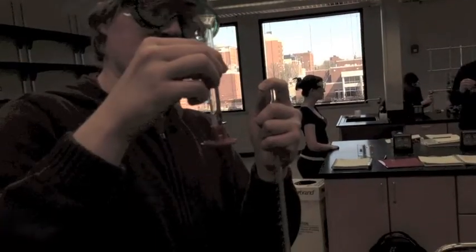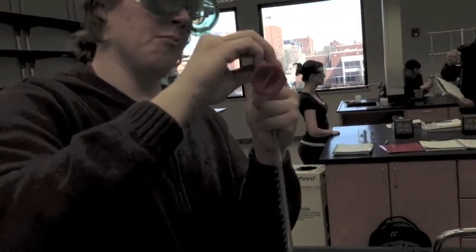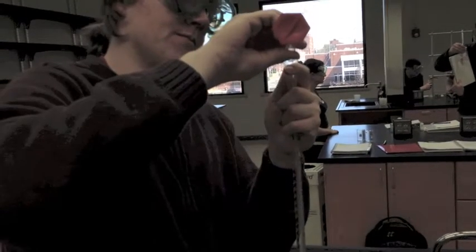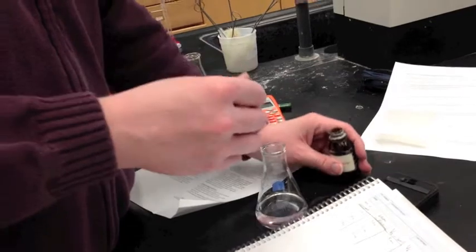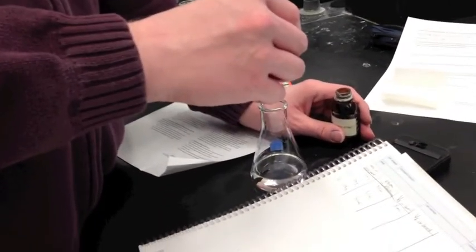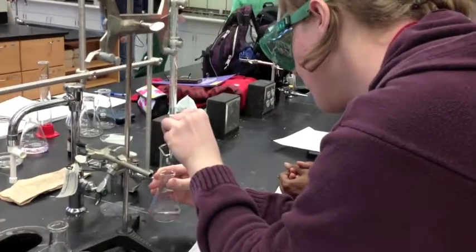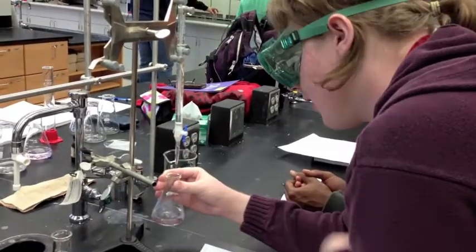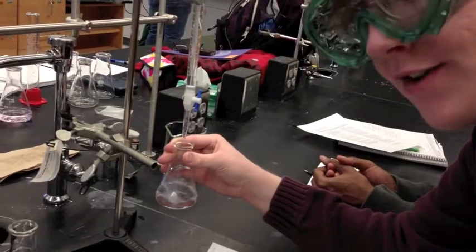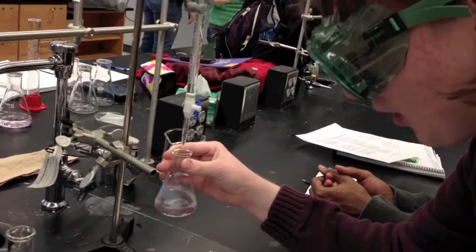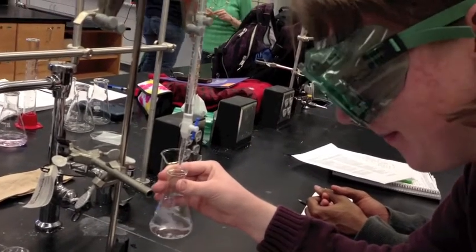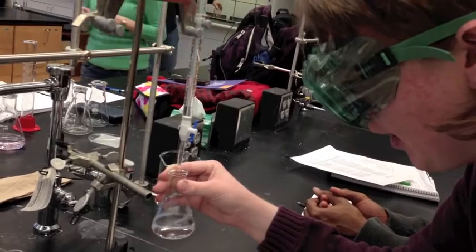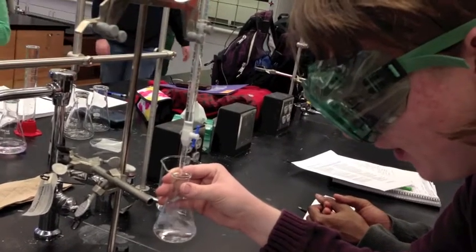You want to take your solution and pour it. Add one drop of phenolphthalein. Titration is the process of determining the concentration of a substance in solution by mixing it with a standard reagent.